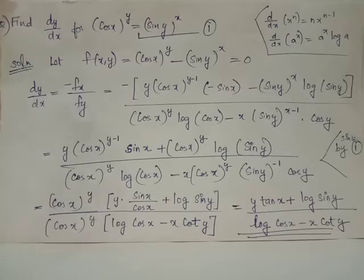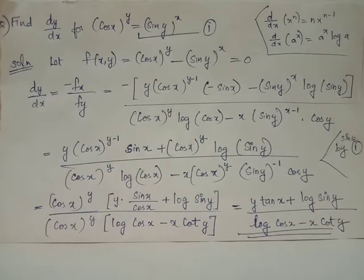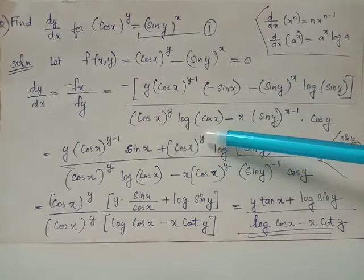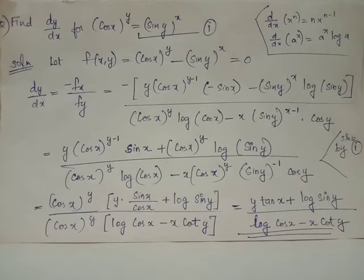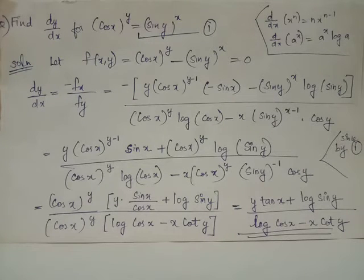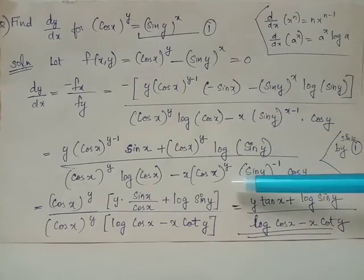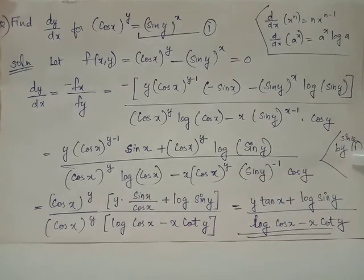Now we distribute the negative sign to both terms in the numerator and both terms become positive. We then replace sin y whole raised to x by cos x whole raised to y, because by equation 1, sin y whole raised to x is exactly the same as cos x whole raised to y. We can also rewrite sin y whole raised to x minus 1 as sin y whole raised to negative 1 times sin y whole raised to x, where sin y whole raised to x is again replaced by cos x whole raised to y. Thus the expression is rewritten using equation 1.